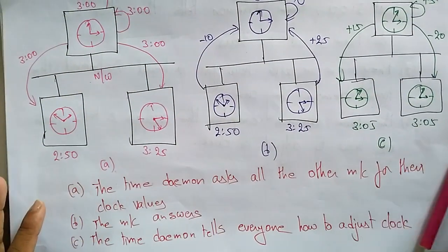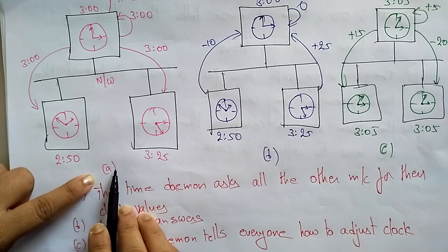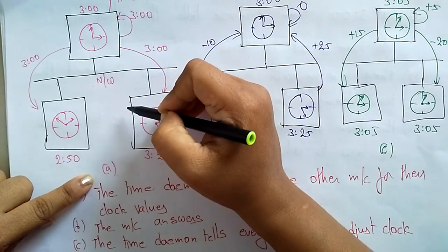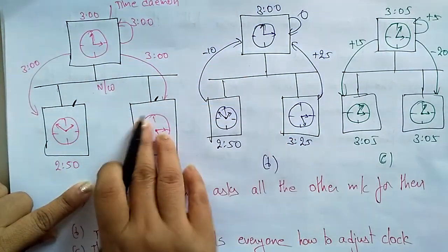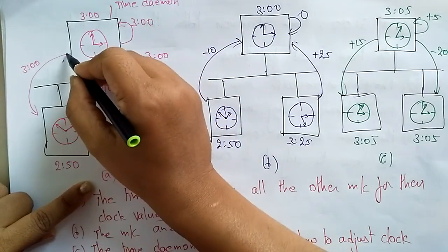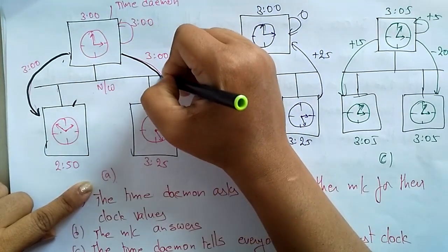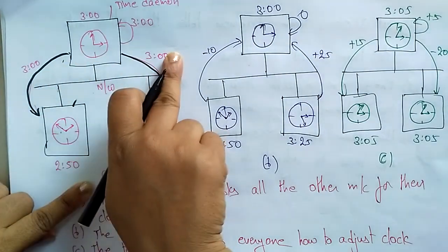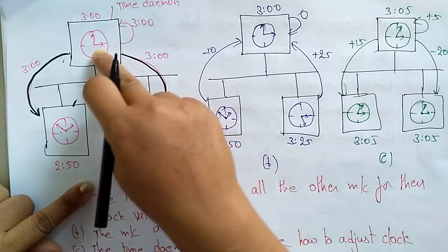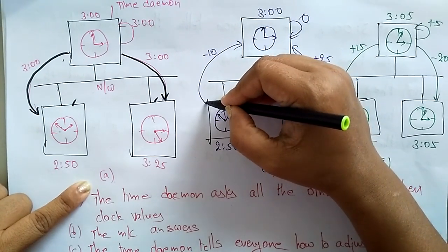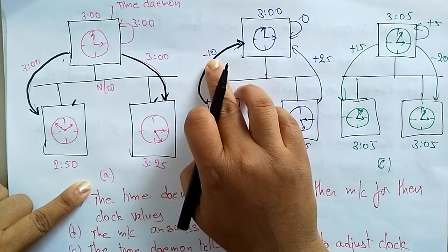In this example, the time daemon asks all other machines for their clock values. All systems are connected in a network, and the daemon asks each machine: what is your clock value? One system replies with 3:00, another system replies with 3:00. Now each machine answers — one says minus 10, meaning its time is 2:50 compared to the server's 3:00.